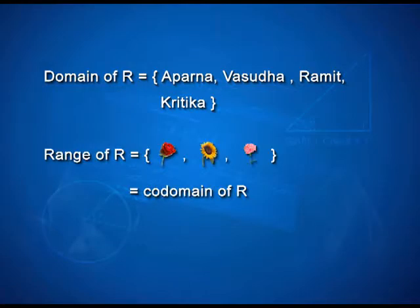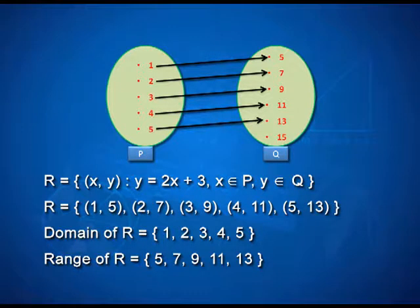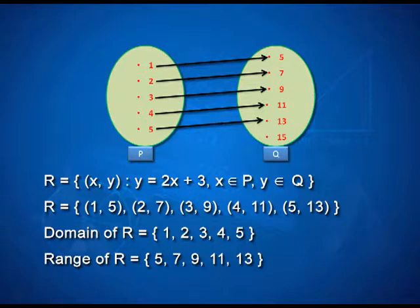In the previous example, the domain of relation R will be the set {Aparna, Vasudha, Ramit, Kritika}, and the range of R consists of the flowers — which in this case is also the same as the co-domain of relation R. In another example, the relation is again represented with arrows. If you see closely, it says that 1 is related to 5, 2 is related to 7, 3 to 9, 4 to 11, and 5 to 13. So the roster form for this relation is nothing but the collection of ordered pairs: (1, 5), (2, 7), (3, 9), (4, 11), and (5, 13).